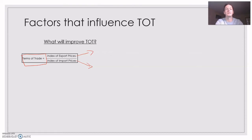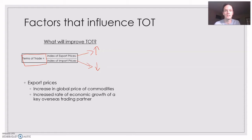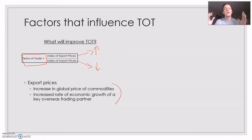What has to happen is either an increase in export prices or a decrease in import prices. If export prices are increasing, that could be caused by an increase in the global price of commodities or an increased rate of economic growth of an overseas trading partner. Either of these two things are going to cause the price of what we sell to go up, and that's a factor that influences the terms of trade to change when export prices change.